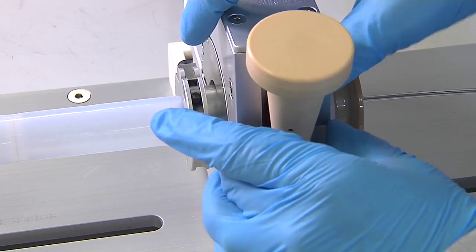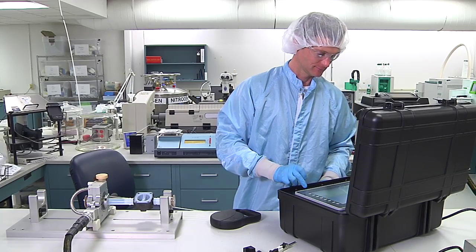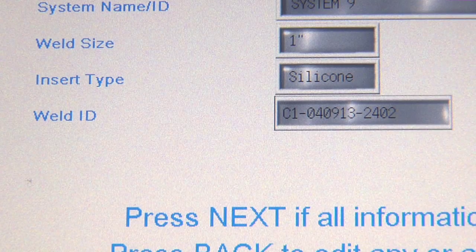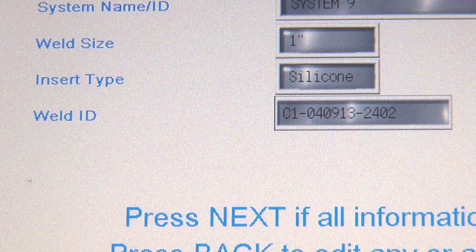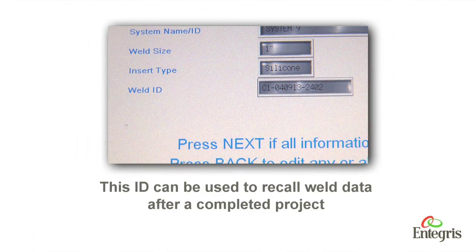The weld in place process does not require the use of an inert gas. Review and verify information on the weld identification screen. A weld ID has been automatically assigned to this weld by the control module. This ID can be used to recall weld data after a completed project.